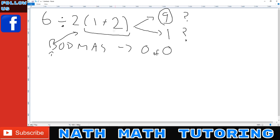So we do the addition 1 plus 2, so it becomes 6 divided by 2 brackets 3.